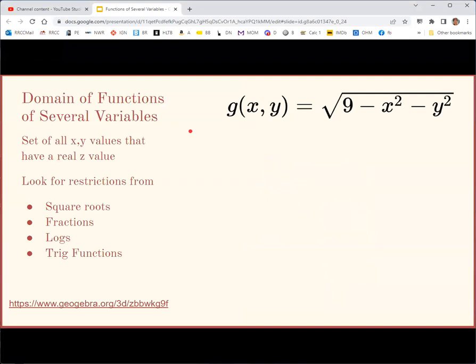You should also be aware of the domain restrictions for trig functions, like tangent and secant, cosecant, cotangent. So finding domain of a function of several variables is the set of all points x comma y that you can put in and get a real value for z. So look for those same restrictions, square roots are technically any even index root or any exponent with an even denominator, fractions because of division by zero, so fractions where the variables are in the denominator, logarithms, and then those trig functions we mentioned.